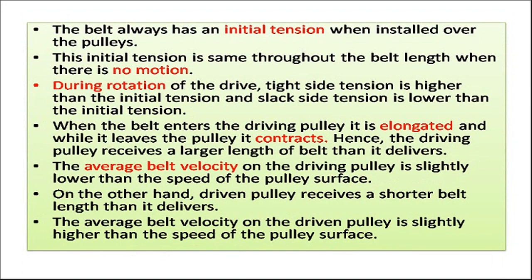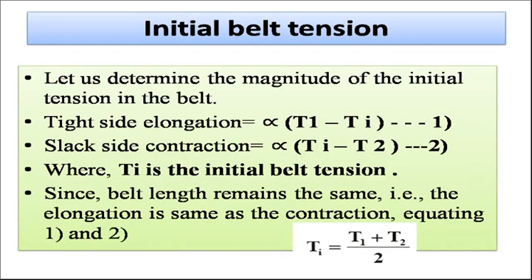The belt always has an initial tension when it is installed over the pulleys. This initial tension is the same throughout the belt length when there is no motion. But when the drive is started, the tight side tension becomes higher than the initial tension and the slack side tension becomes lower. When the belt enters the driving pulley it is elongated, and when it leaves it contracts. Hence the driving pulley receives a larger length of belt than it delivers, and the average belt velocity on the driving pulley is slightly lower than the pulley surface speed. The driven pulley receives a shorter belt length than it delivers, so its average belt velocity is slightly higher than the pulley surface speed.